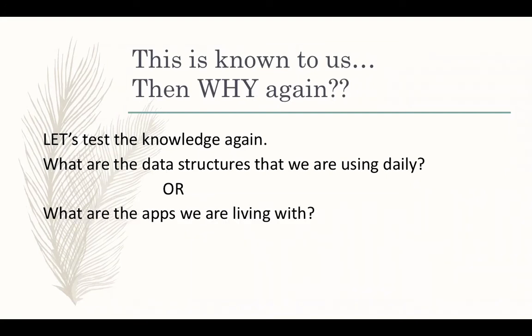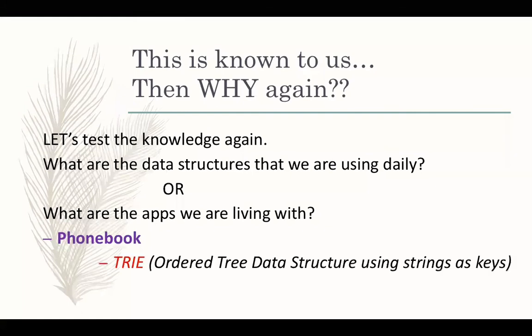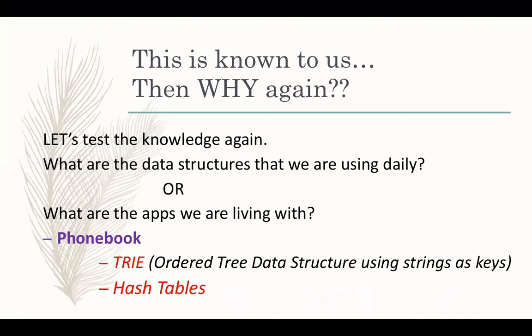The apps we all use — the phone book uses an ordered tree (trie) data structure, which we will study. Majority of phone books use a trie data structure. They may also use hash tables — a single index for entries so you can directly reach an entry, similar to accessing by roll number to get details directly.